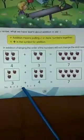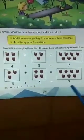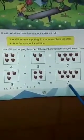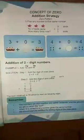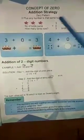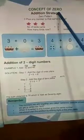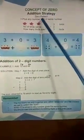So, 4 plus 3 is equal to 3 plus 4 is equal to 7 only. Next, we will do the concept of 0. Addition strategy — how to do? 0 pattern.